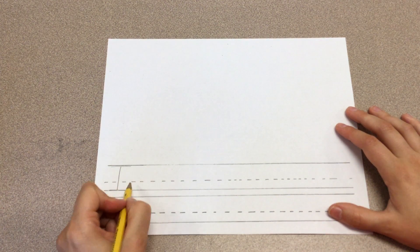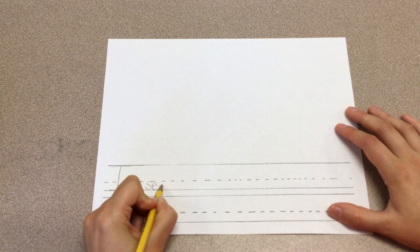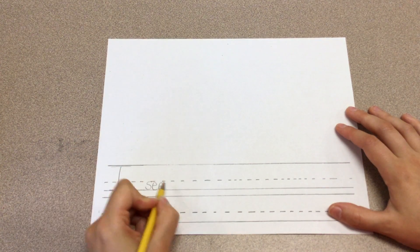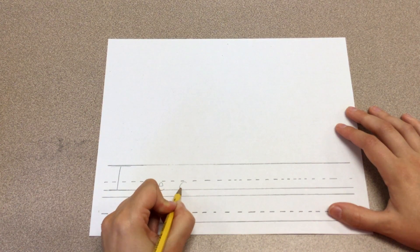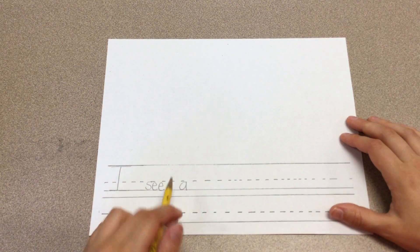Then see, space. See is a sight word, S-E-E. I see, space. A, sight word, right? I see a.